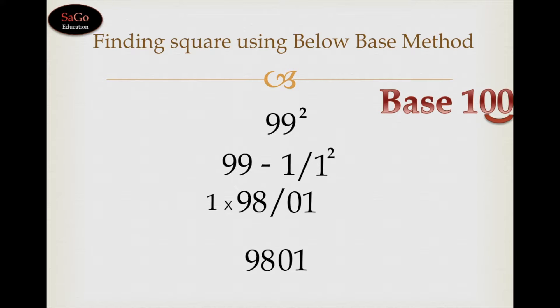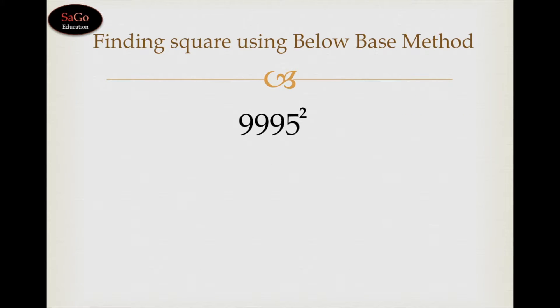Let's take one more sum: 9995 squared. We would write down the base 10000. Write down the given digit as it is. It is 5 less than its nearest base 10000, so we would subtract 5 in it, put a slash, and now we would square the same number, which is 5.